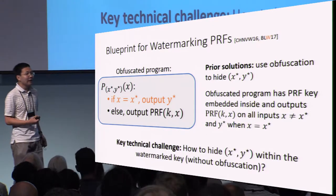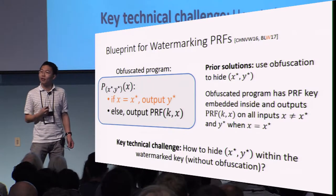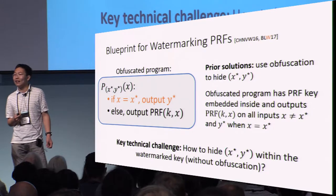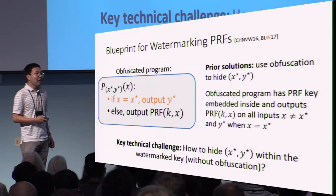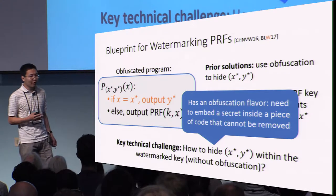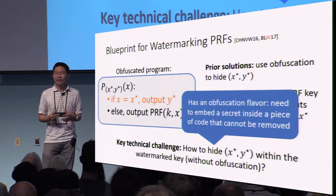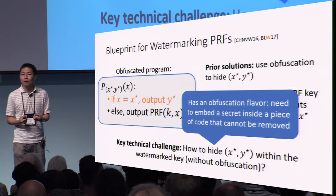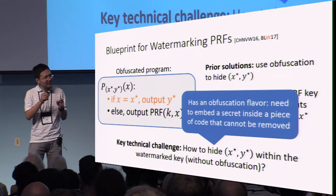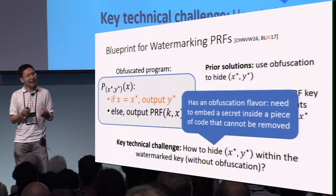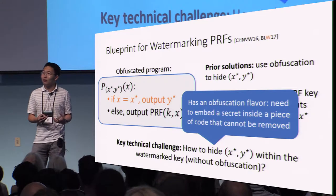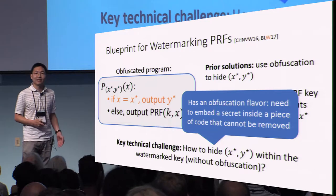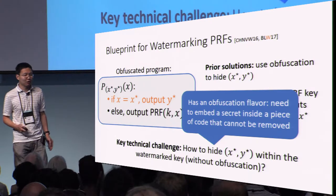The key technical challenge, at least if we follow this blueprint for realizing watermarking, is how do we embed a point x*, y* within the watermark key without relying on general purpose obfuscation. If you take a step back, this has a very strong obfuscation flavor to it, because the adversary is given a description of a piece of code and inside this code is a secret point that has been rewired. We're asking that given access to this code, there's really nothing the adversary can do to learn x* and y* and extract and remove it from the program.